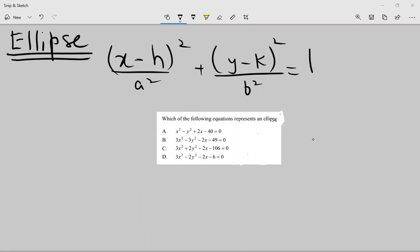The standard form of the ellipse that is in front of you: x minus h whole square upon a square plus y minus k whole square upon b square is equal to 1.